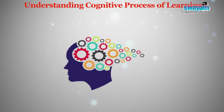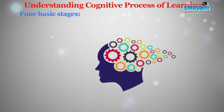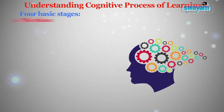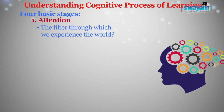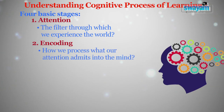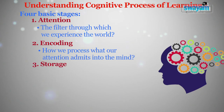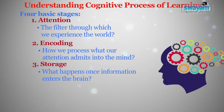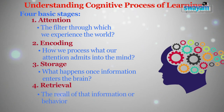Before we discuss blended or hybrid learning, let's first understand the cognitive process of learning. The cognitive process of learning has four basic stages: first, the Attention stage — the filter through which we experience the world; second, Encoding — how we process what our attention admits into the mind; third, Storage — what happens once information enters the brain; and the fourth stage is Retrieval — the recall of that information or behavior.